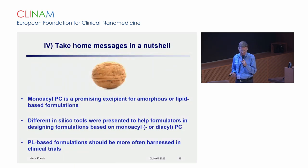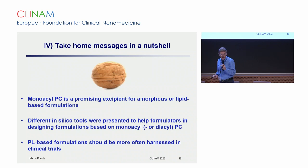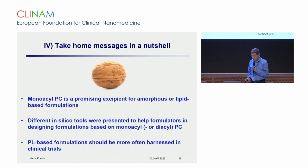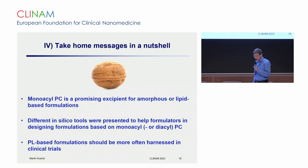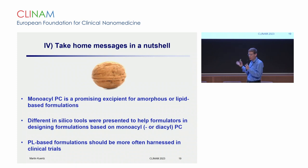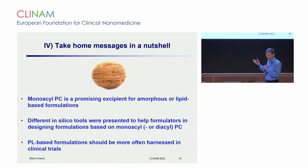That brings me to the take-home messages. Not just from my talk but also from the previous talks, monoacylphosphatidylcholine is a very promising excipient. For amphotericin B and nilotinib, it seems very attractive to make amorphous complexes that can also be used as intermediates for other lipid-based formulations. In silico tools help guide formulators these days. These phospholipid complex formulations are not new — they were initially used for non-steroidal anti-inflammatory drugs and have a long history going back well before 2000. So what is modern is knowing when to use which type of system.